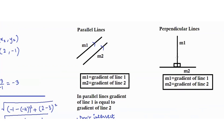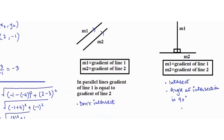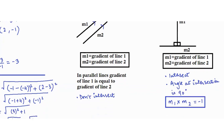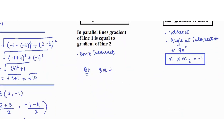Perpendicular lines do intersect, and the angle at intersection is 90 degrees. The condition for the gradient in this case is that the product of m1 and m2 always equals negative 1. For a question, let's say we have line 3x plus y equals 3 and 9x plus 3y equals 1.